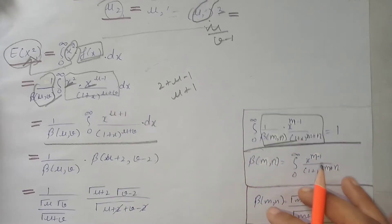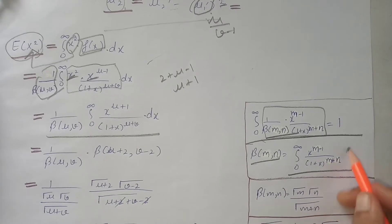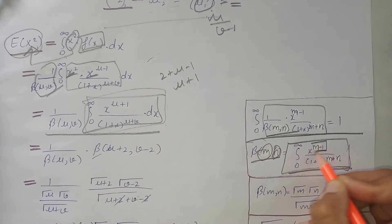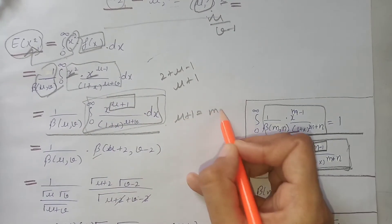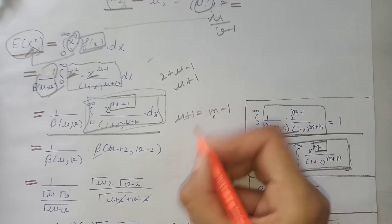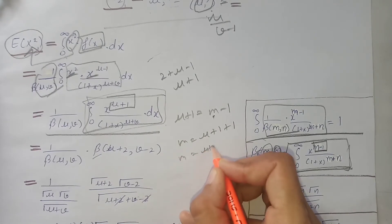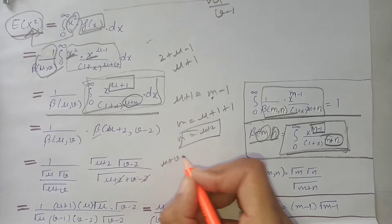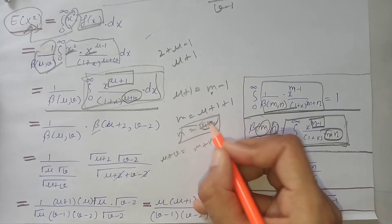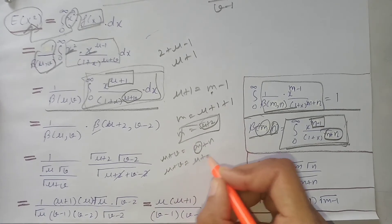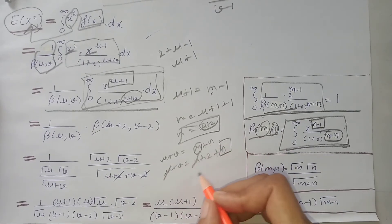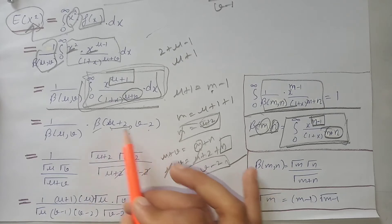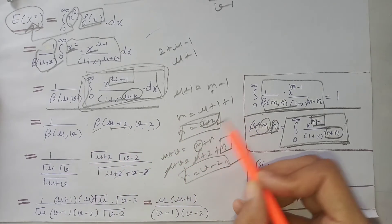From the E[X²] integral we again recognize the beta function definition. Comparing terms, u+1 equals m minus 1, so m equals u+2. To find n, we use u plus v equals m plus n, substituting m = u+2, which gives n equals v minus 2. So we write this as Beta(u+2, v-2).